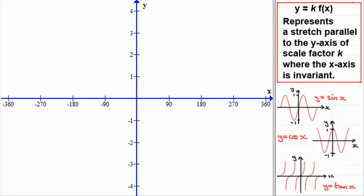Hi, welcome to this tutorial on transforming trigonometric graphs. Before we start, you should be familiar with the three graphs of y equals sin x, y equals cos x, and y equals tan x. These are going to form the base graphs that we're going to transform. In this tutorial, we're going to look at the transformation y equals k times f of x, where k is a positive constant.